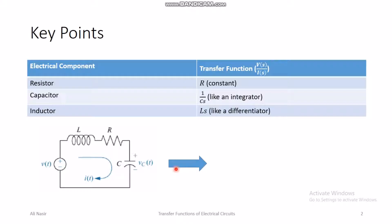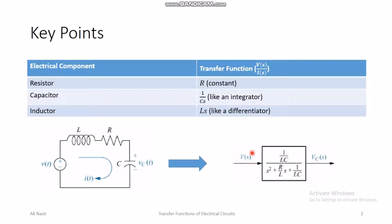This circuit can be translated into an LTI system with a transfer function — a system that has an input and an output. We select V(s), the Laplace domain form of the input voltage v(t), and V_C(s), the Laplace transform of the voltage across the capacitor, as the output. The transfer function between input and output is what we want to find, and I will use the three impedance relationships to derive it.